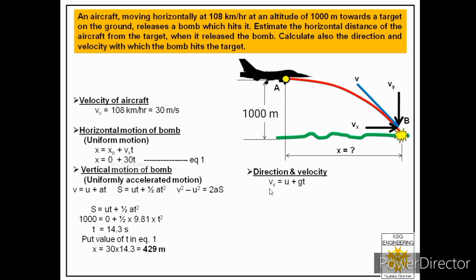To find vy, we use v = u + at, where v is the final velocity vy of the projectile in the y direction, u is the initial velocity in y direction = 0 (since the aeroplane is moving horizontally), g = 9.81 m/s², and t = 14.3 seconds. Substituting: vy = 0 + 9.81 × 14.3 = 140.1 m/s. So vx = 30 m/s and vy = 140.1 m/s.